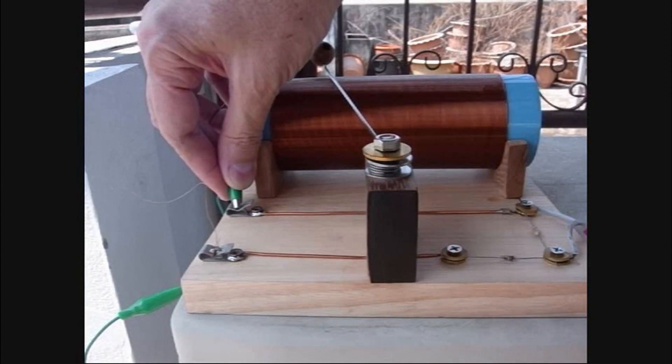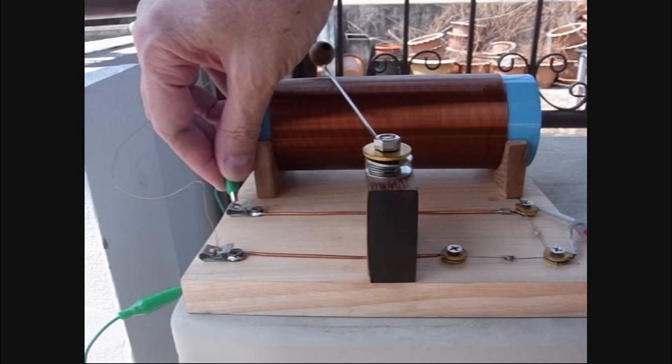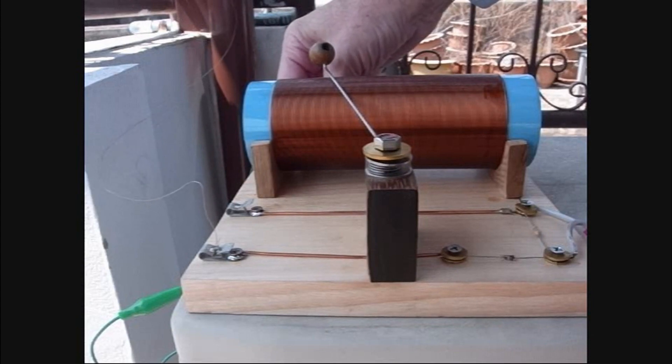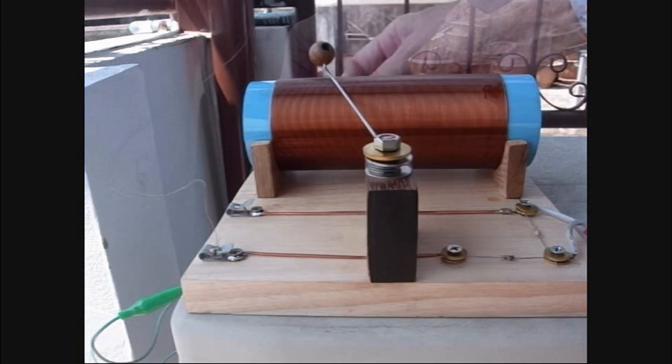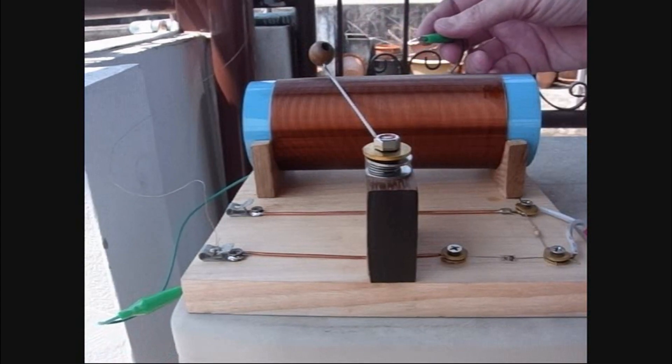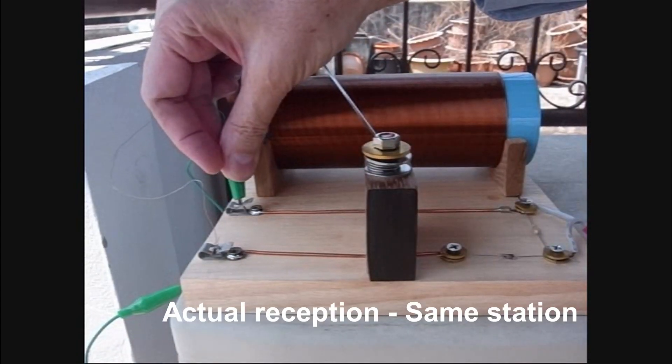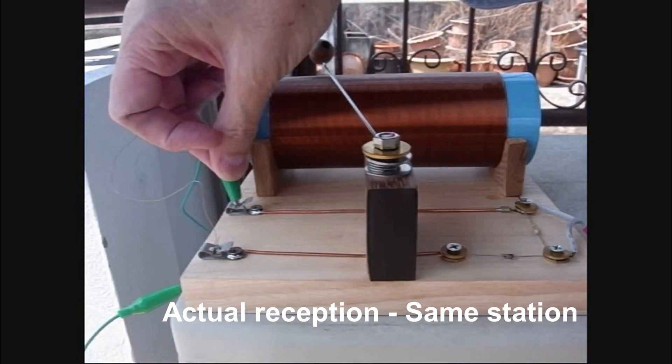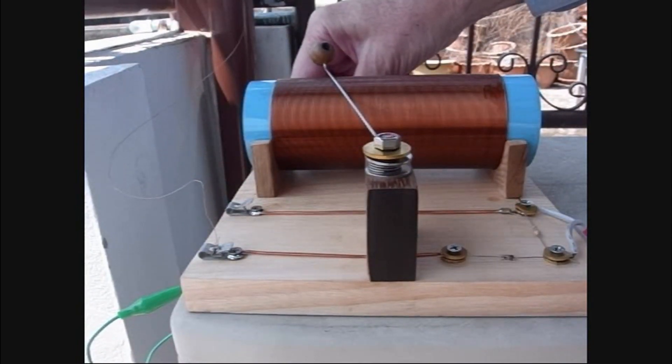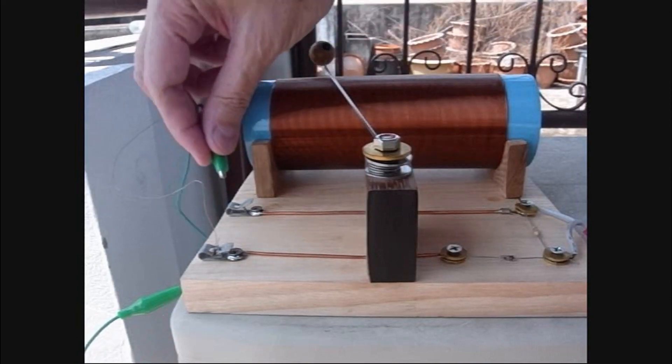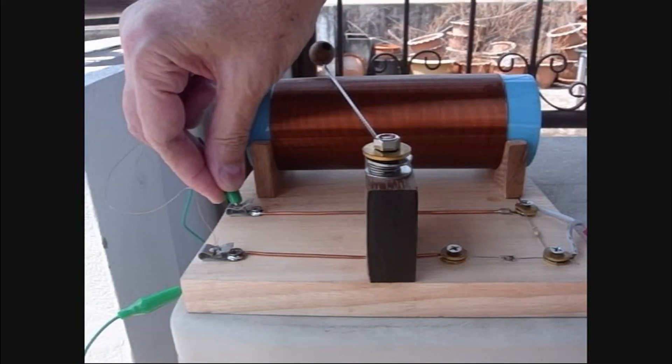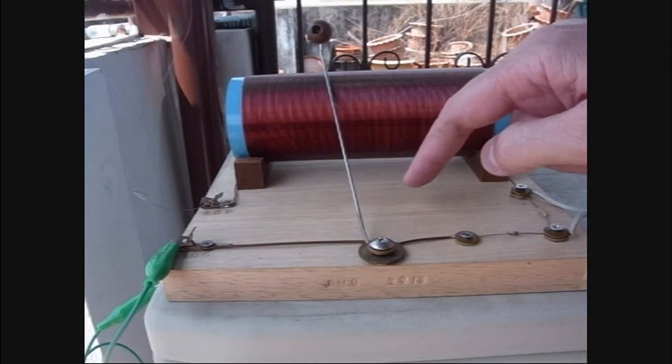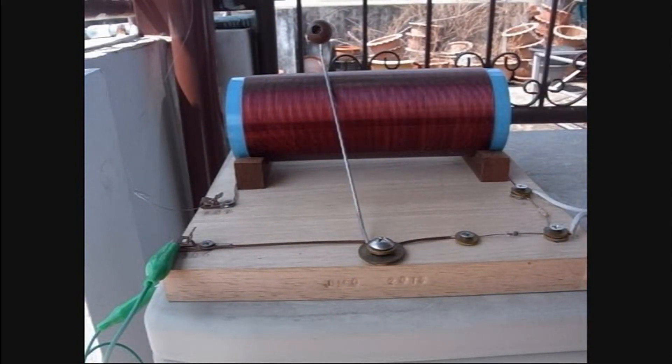So I can compare the two directly by just moving the ground or the antenna from this point to this point. In this version, this is the new version. And by connecting it back here, it works exactly like the Boy Scout, modified Boy Scout Radio. Okay, so let's try both ways. I don't know about you, but I think the connection in the back is louder.